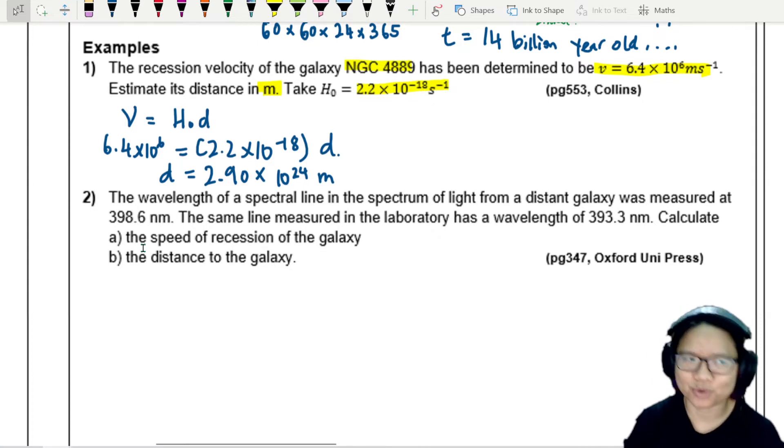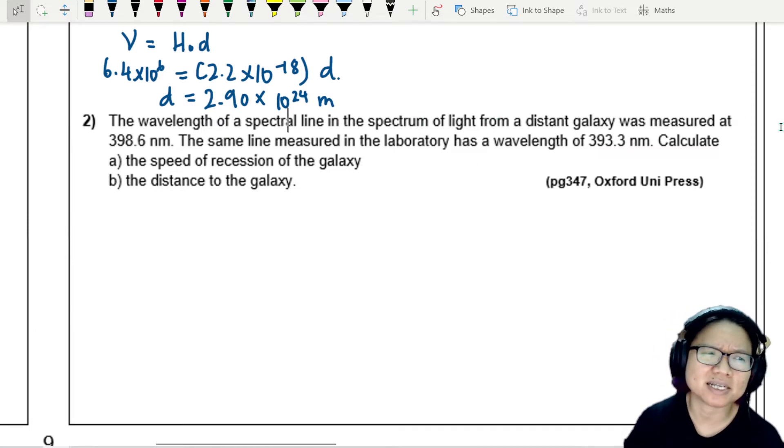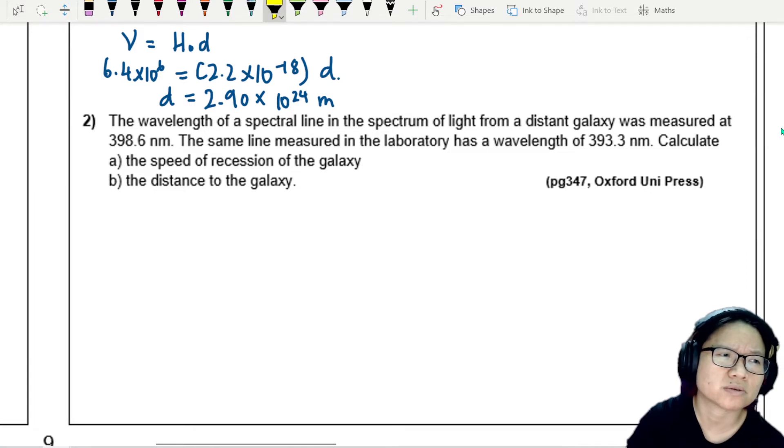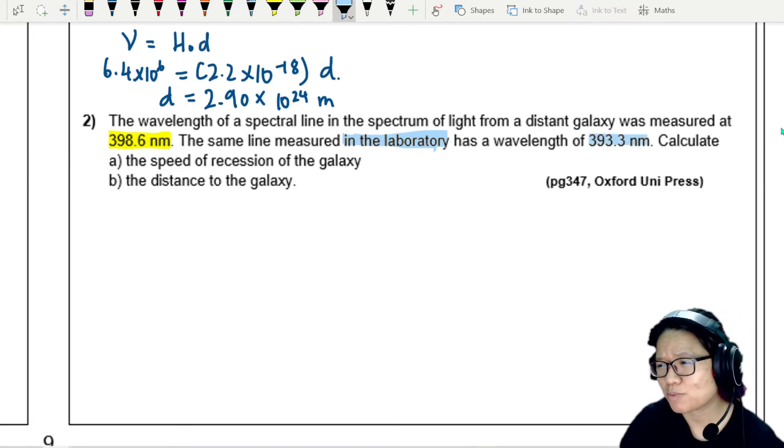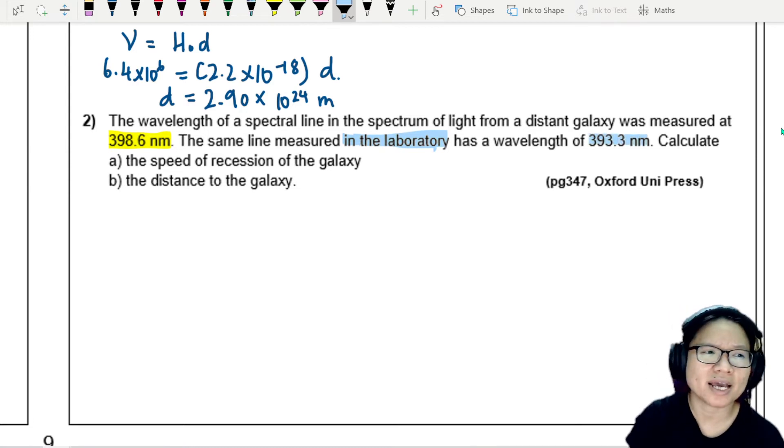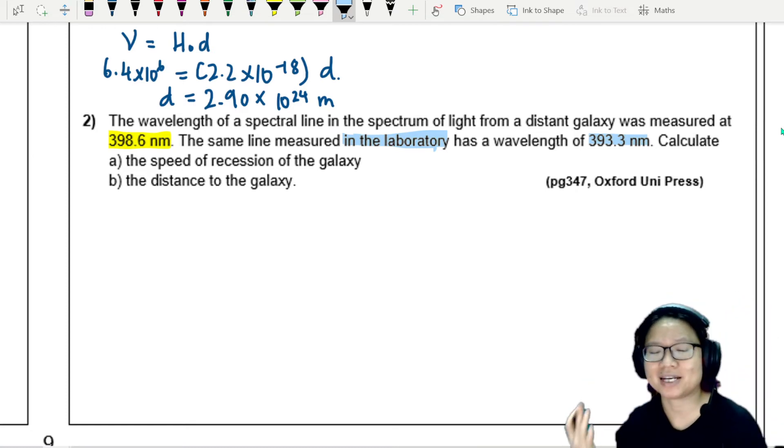Let's look at the next question. The wavelength of a spectral line in the spectrum of light from a distant galaxy is measured to be this one. The distant galaxy, the same line measured in the lab, the good old planet Earth, solar system. Calculate the speed of recession of the galaxy, and based on the speed of recession, find how far away that galaxy is.